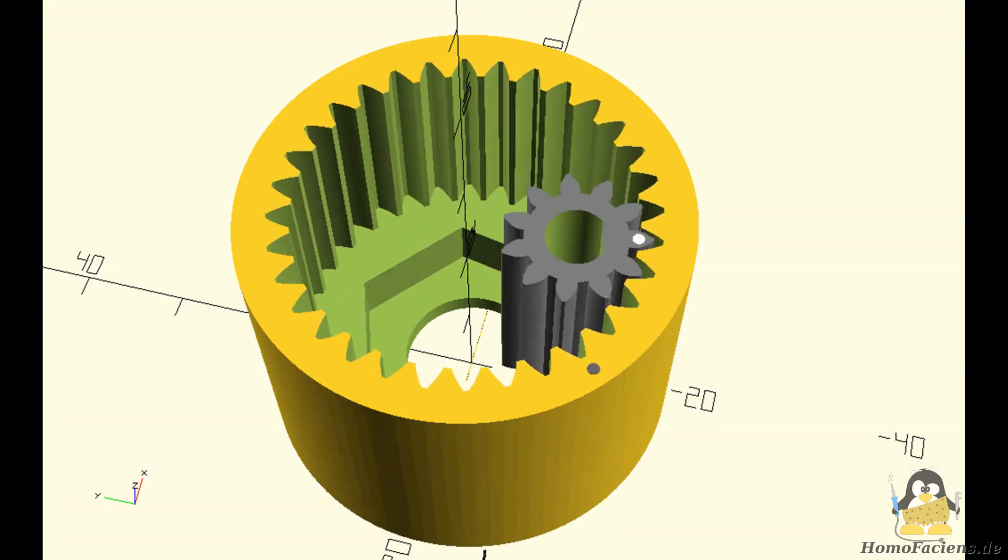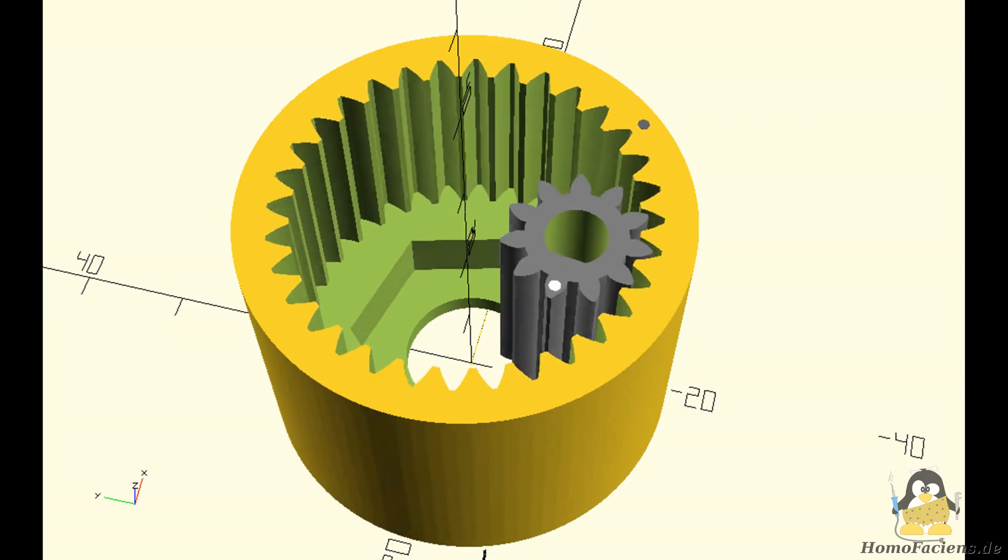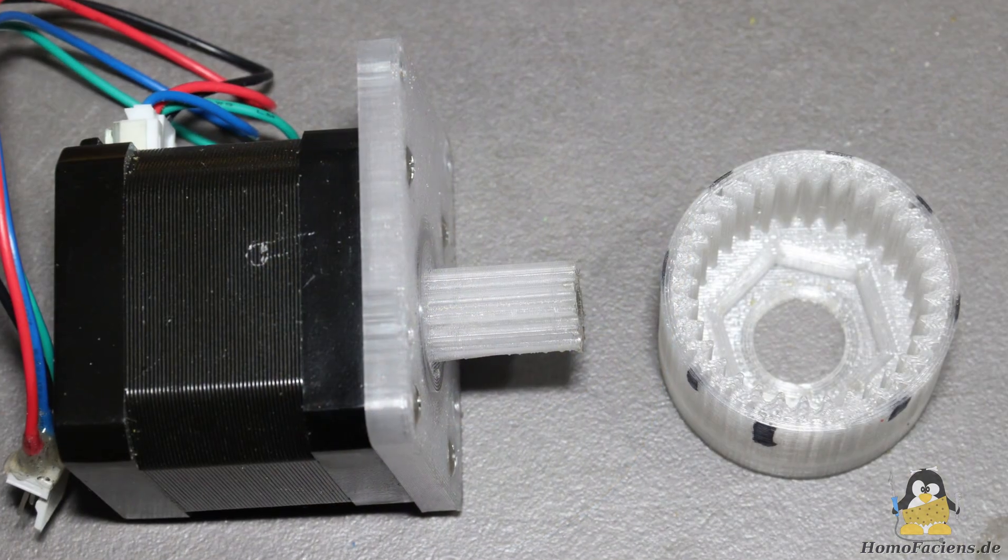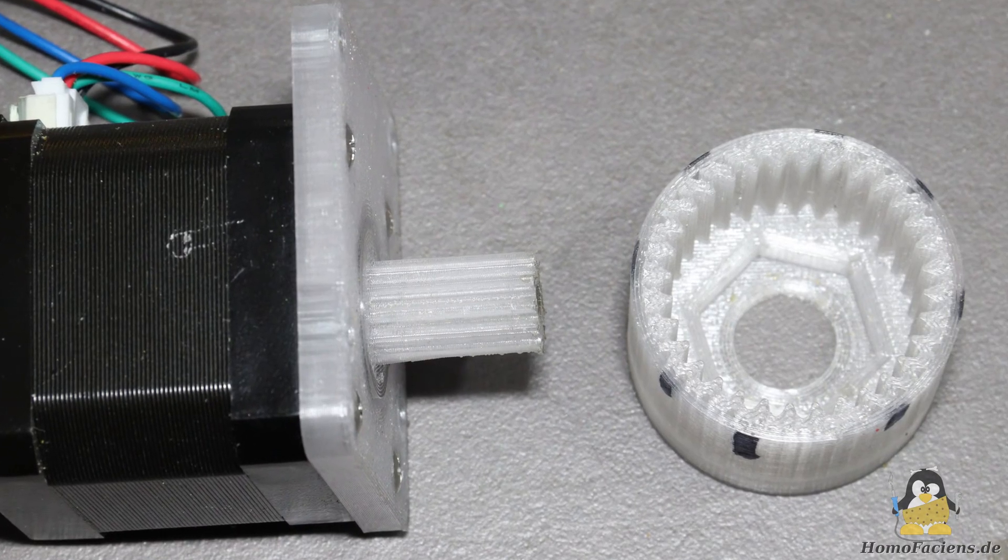The slight backlash and the fact that this isn't a planetary gear are advantageous. With the homemade gear from a 3D printer, you can also freely choose the reduction ratio.